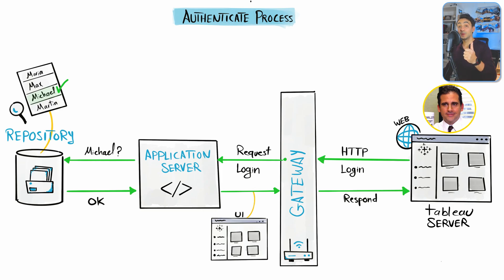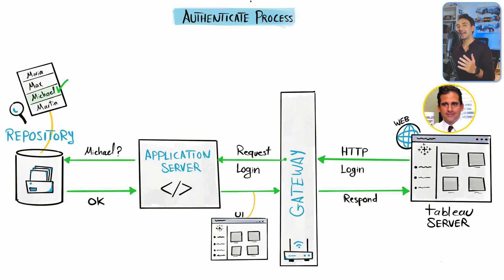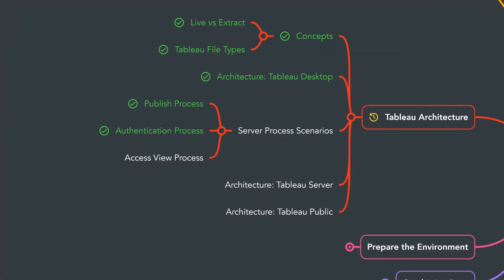To recap: the gateway is responsible for forwarding requests to the right component; the application server handles the authentication process; the repository stores user credentials and manages access permissions; and the application server renders the web interface of the server. Next, we will talk about what happens in Tableau once we access a workbook to view the data.